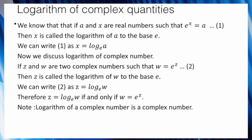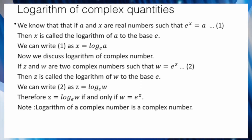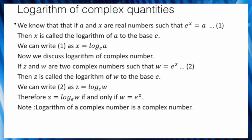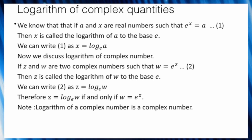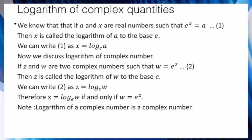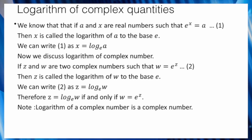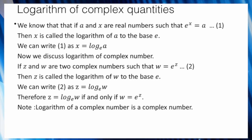We write x equal to log_e(a). Now for the logarithm of a complex number: if z and w are two complex numbers such that w equals e to the power z, then z is called the logarithm of w to the base e. We write z equal to log_e(w), if and only if w equal to e to the power z. The logarithm of a complex number is a complex number.